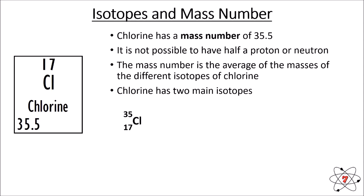One isotope has 17 protons and a mass number of 35, which means there are 18 neutrons. The other isotope has 17 protons again — the proton number must be the same, because if it were different it would no longer be chlorine — and a mass number of 37, which means there must be 20 neutrons.